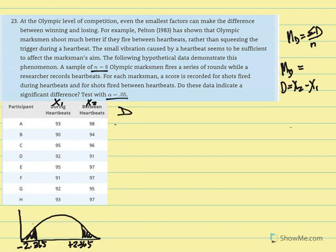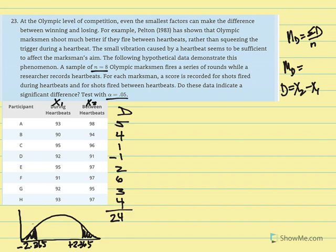So in your calculator, go ahead and compute the difference between 98 minus 93, and we get a value equal to 5. 94 minus 90, we get 4. 96 minus 95, 1. 91 minus 92, negative 1. 97 minus 95, 2. 97 minus 91 would give us 6. 95 minus 92, 3. And 97 minus 93 is equal to 4. So our mean difference is equal to 24 over 8 is equal to 3.